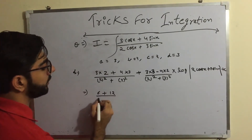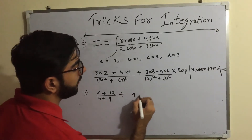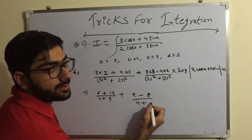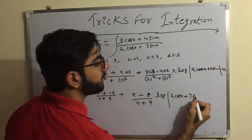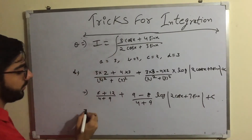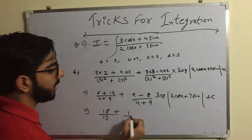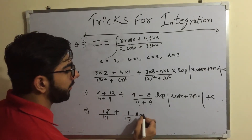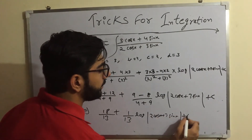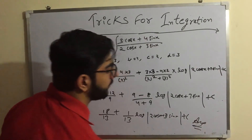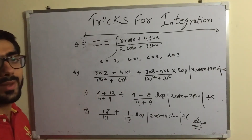Solving further: 3×2 + 4×3 = 6 + 12 = 18; denominator 4 + 9 = 13; so 18/13. For the log coefficient: 9 − 8 = 1; so 1/13 · log|2cosx + 3sinx| + C. So the answer is (18/13)x + (1/13)·log|2cosx + 3sinx| + C.